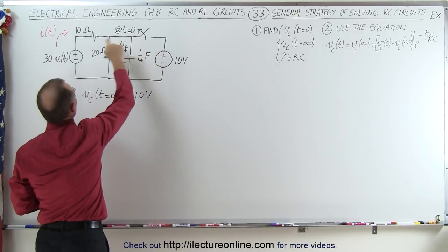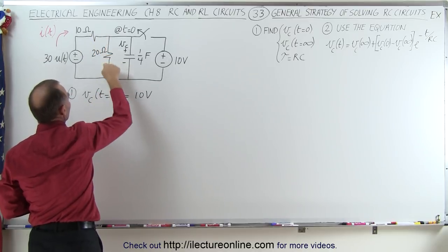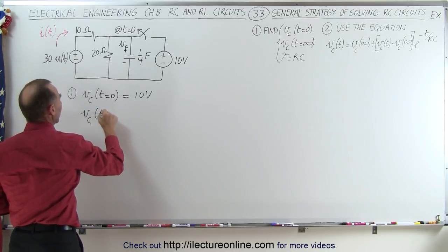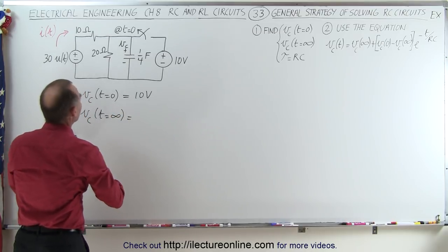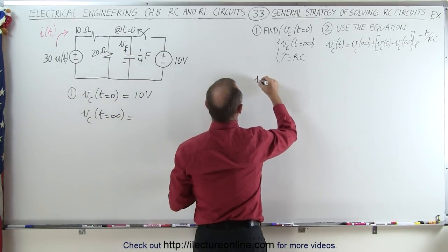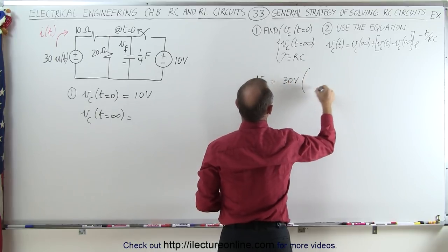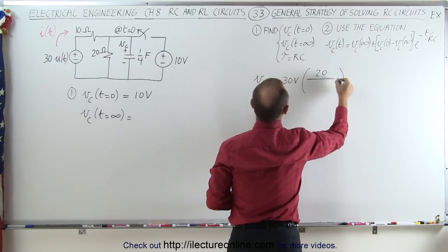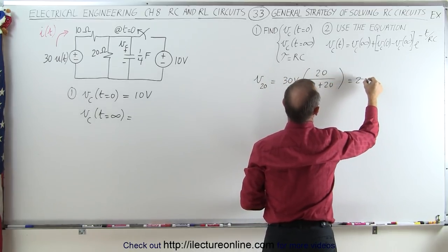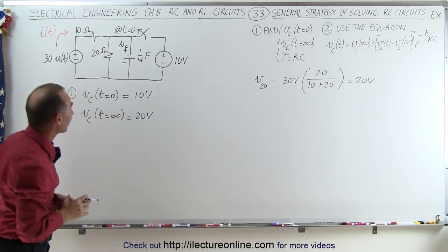As time goes by, the switch is now open and this voltage supply provides 30 volts, pushing current through this resistor, this resistor, and through the capacitor until it fully charges. At that point, the voltage across the capacitor at time equals infinity equals the voltage across the 20 ohm resistor. That voltage equals the source voltage of 30 volts times the ratio of 20 ohms divided by the sum of the two resistors, 10 plus 20, which is 20 divided by 30 — equal to 20 volts. So at infinity, there are 20 volts of potential difference across the capacitor.